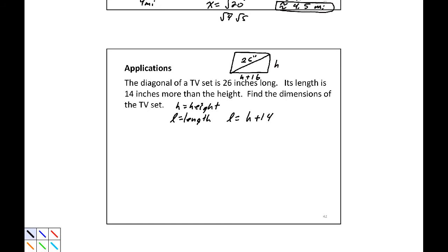Based on the Pythagorean theorem, we can say because this is a right angle, it is a TV set, so we're assuming that it's at right angles. This would be h plus 14 squared plus h squared equals 26 squared. Now I'm going to multiply h plus 14 by h plus 14. That would be h squared plus 28h plus 196 plus h squared equals 676.